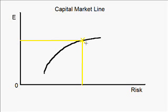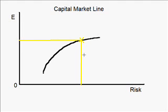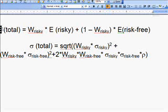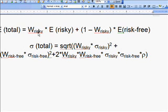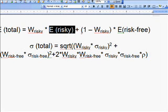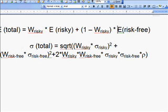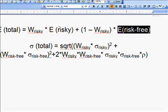We take a point from the efficient frontier — this point was constructed by investing our money into different risky equities, so it is a single portfolio. If we invest part of our money into this risky portfolio and the rest into the risk-free assets, the first equation gives us the expected return of the total portfolio: it equals the weight of the risky portfolio times its expected return, plus the weight of the risk-free portfolio times the expected return of the risk-free portfolio.